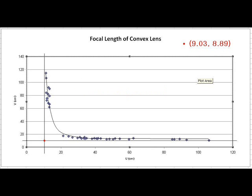In our focal length of a convex lens graph, horizontal and vertical asymptotes were drawn to closely examine the approximate estimation of the focal length. Within the graph, the focal point is plotted red on the left bottom of the graph. The XY coordinates are 9.03 and 8.89 cm. The X coordinate shows the focal length of the convex lens, which is about 9.03 cm. Also, the curve of best fit was drawn to estimate the close curve of the graph.